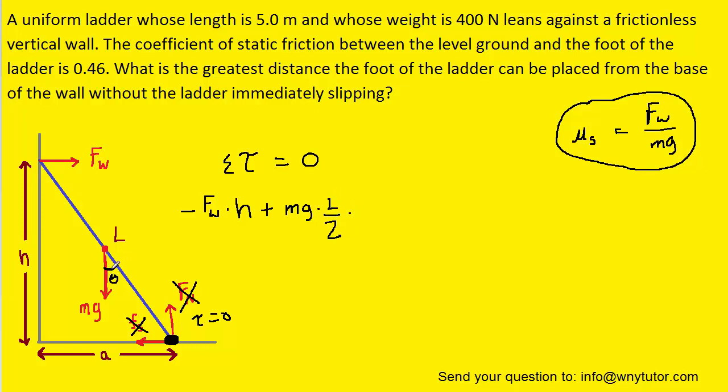Now again, hopefully from the diagram, we can see that this angle is equivalent to this angle here. And the sine of that angle is equal to the opposite, which is A, over the hypotenuse, which would be L.